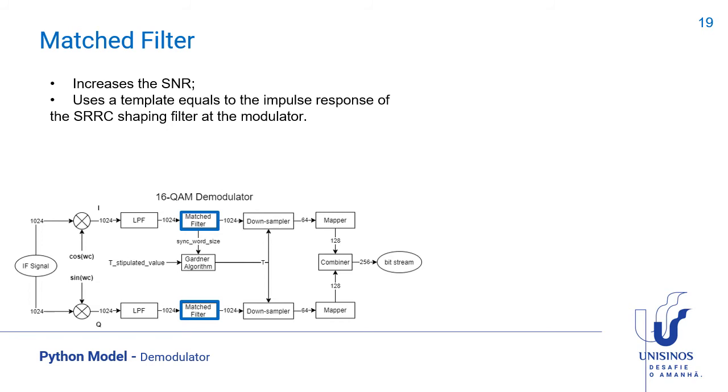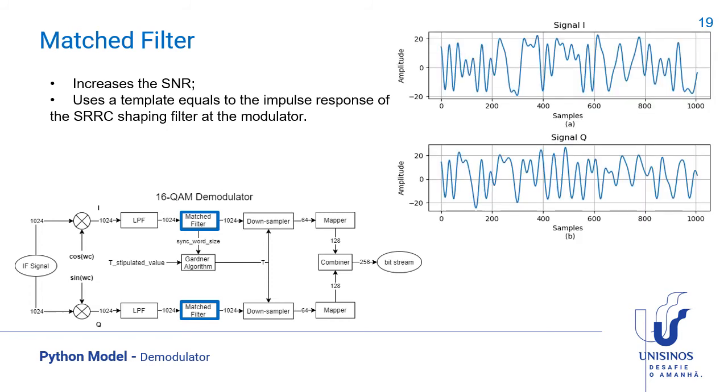The matched filter block convolutes a template based on the square root raised cosine filter with the signal. The goal is to increase the signal-to-noise ratio. We can see in this figure that the amplitude of the signals have increased as well.